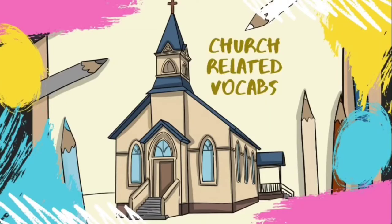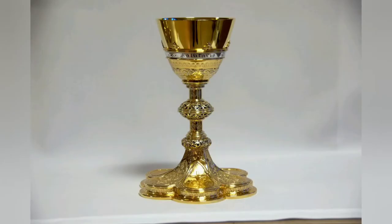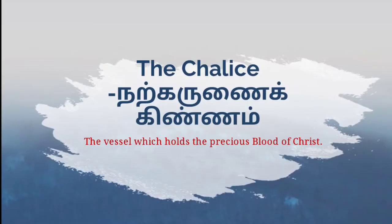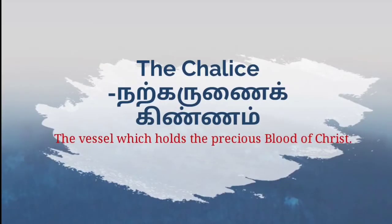Hello everyone, today we are going to learn new vocabularies related to church. Here are some Catholic symbols that you will see almost in every Catholic church throughout the world. Let's start. The vessel which holds the precious blood of Christ is the chalice.